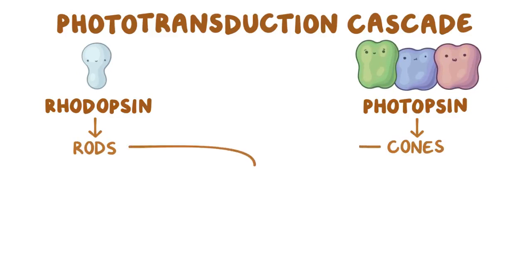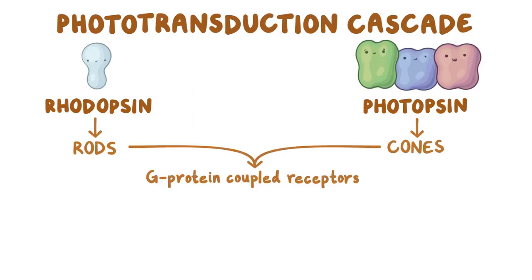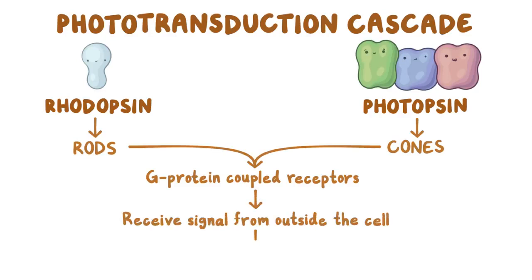Rhodopsin and photopsin are both G-protein coupled receptors and are in the opsin family. G-protein coupled receptors are cell surface receptors that receive a signal from outside of the cell and trigger changes within the cell.